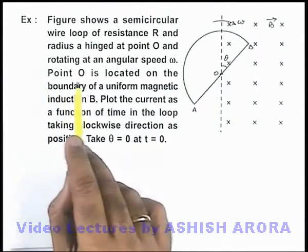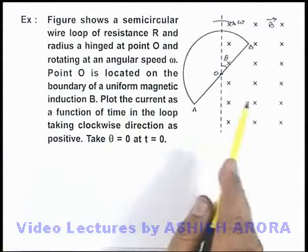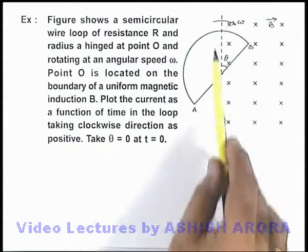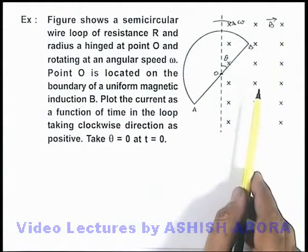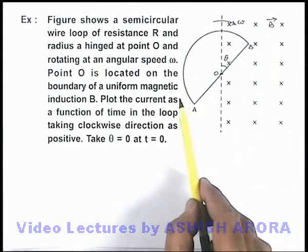Point O is located on the boundary of a uniform magnetic induction B. On the right side of the boundary, a uniform magnetic induction B exists, and on the left side there is no magnetic induction.